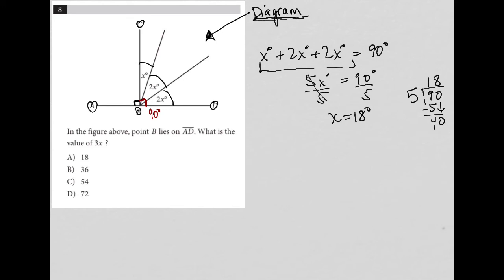The question says, in the figure above, point B—let me just erase everything so we can clearly see where all the points are. Point B, which is here, lies on AD. What is the value of 3x?